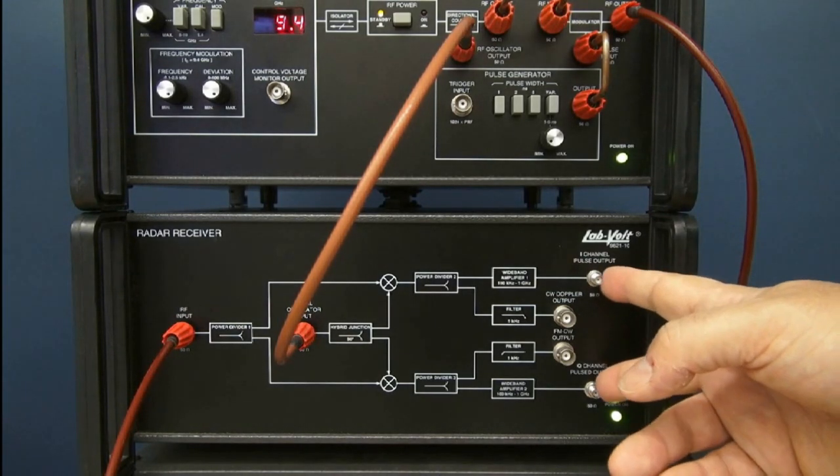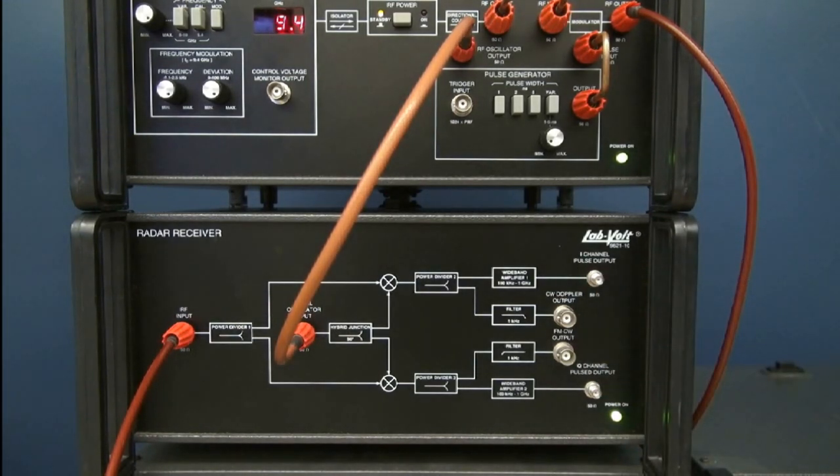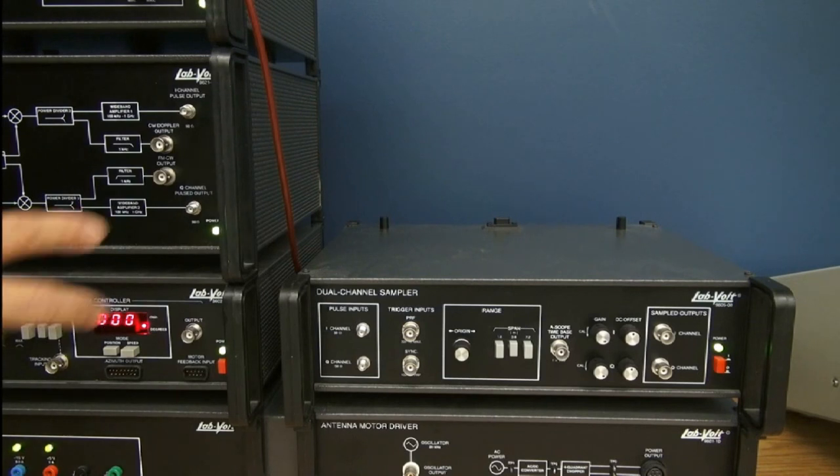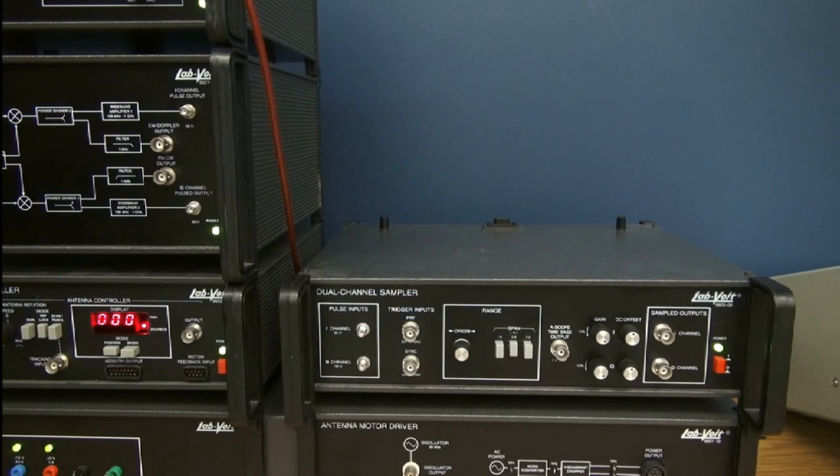So these two channels will need to be looked at on an oscilloscope. An oscilloscope that would be able to look at one nanosecond pulses would be quite expensive. So we will need to use a trick to be able to use less expensive equipment. The I and Q channels from the radar receiver will go into the dual channel sampler. This will be used to take the very narrow pulses in the order of 1 to 5 nanoseconds and stretch them by a factor of 1000 to get pulses in the order of 1 to 5 microseconds which will be a lot easier to look at on the oscilloscope.